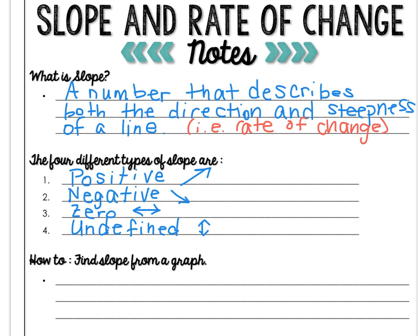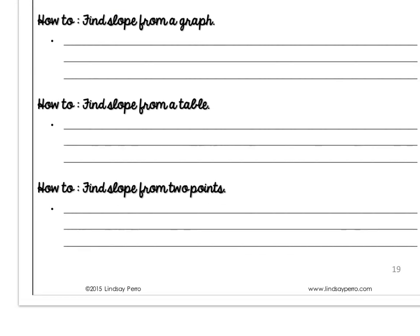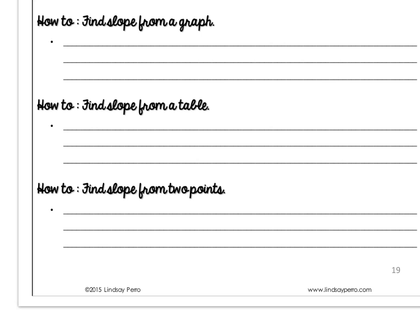You can find slope in three ways, which we'll cover now. From a graph, from a table, or from two points. And all have their merits, so you should be comfortable with doing it in any of these three ways.